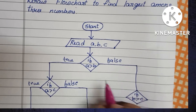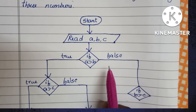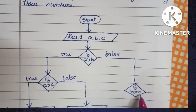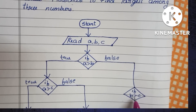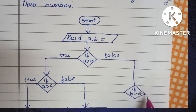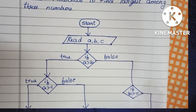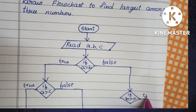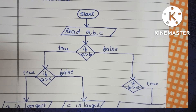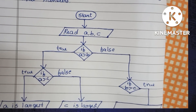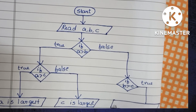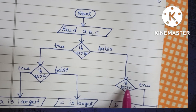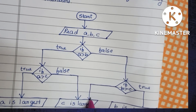If A greater than B is false, we compare B with C. If B is greater than C, this condition is true, so we print B is largest. If this condition is false, then C is largest, so we print C is largest.